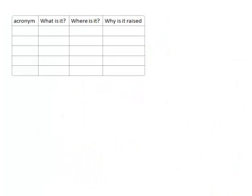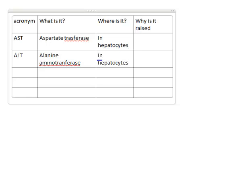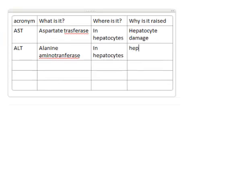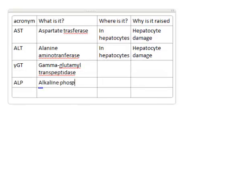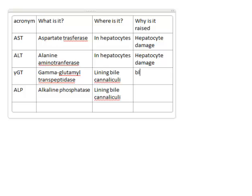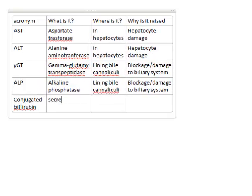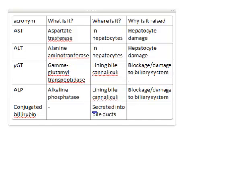To summarise, the liver function tests comprise the aminotransferases — AST and ALT — which sit in the hepatocytes, and if raised, indicate hepatocellular damage. They also include the bile cannulae enzymes, gamma-GT and alkaline phosphatase, where if those are raised it suggests blockage in the biliary system or toxic damage to those cells. A high conjugated bilirubin in the systemic circulation suggests that the conjugated bilirubin being secreted into the bile ducts is backing up due to a blockage.